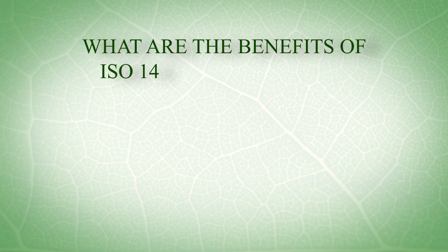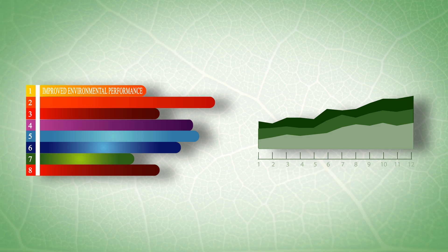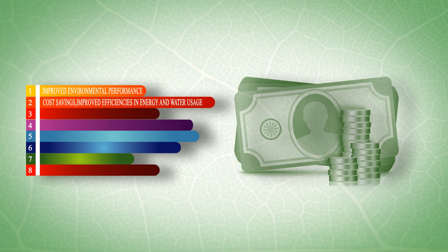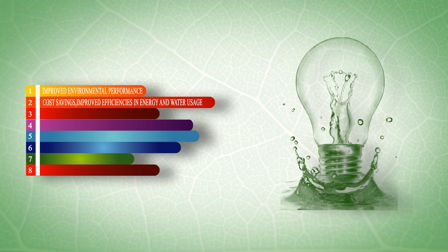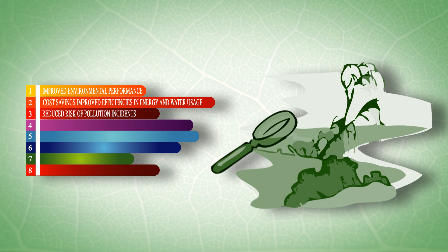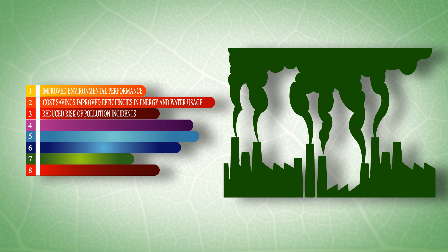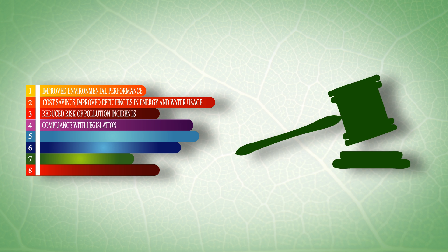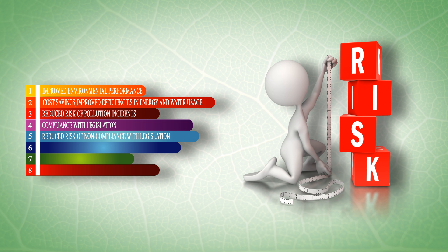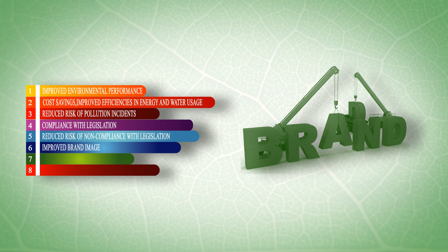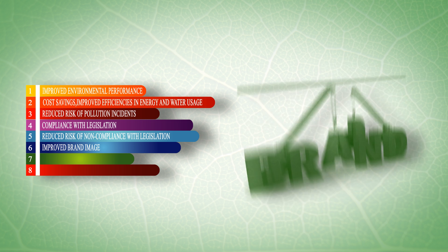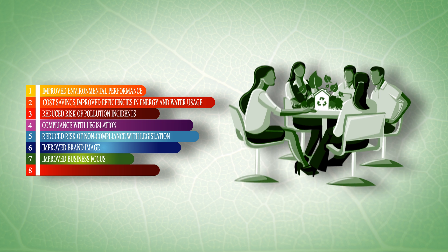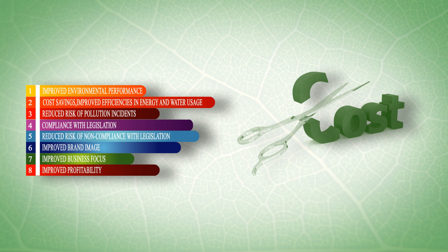What are the benefits of ISO 14001 registration? Improved environmental performance led by top management commitment. Cost savings can be achieved through improved efficiencies in energy and water usage and through waste minimisation. Reduced risk of pollution incidents and other releases to the environment and therefore avoidance of unnecessary clean-up costs or enforcement action by regulatory bodies. Compliance with legislation through the identification of new legislation in adequate time to address appropriate issues. Reduced risk of non-compliance with legislation and subsequent costs and prosecution. Improved brand image as customers will see an organisation that is in control of its impact on the environment. Improved business focus and communication of environmental issues. Improved profitability through cost reductions and improved customer satisfaction.